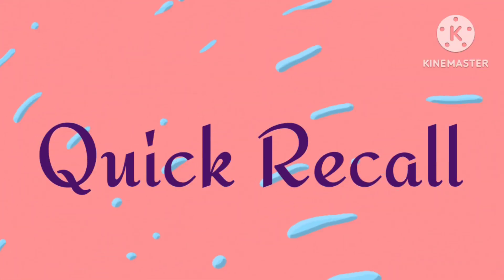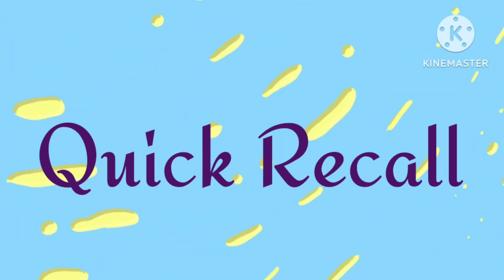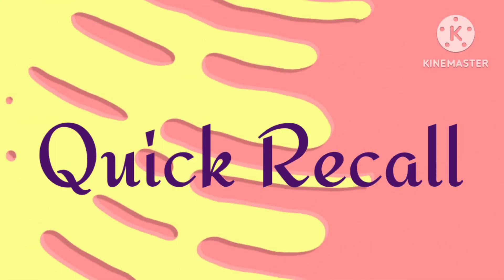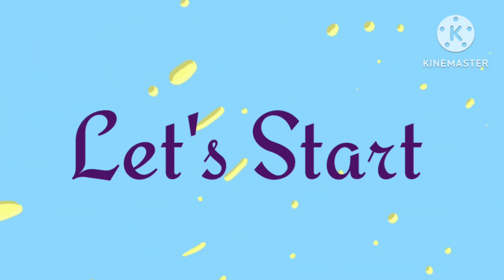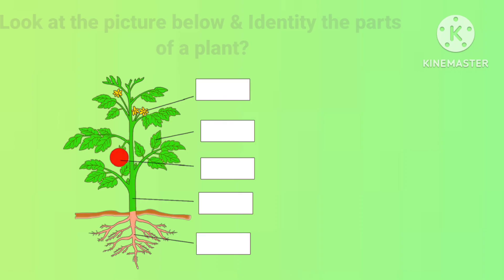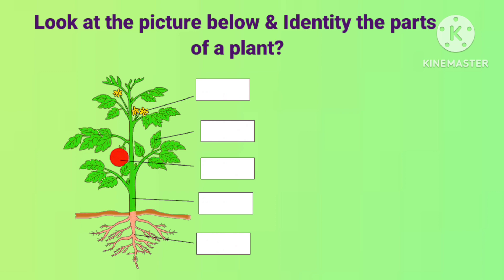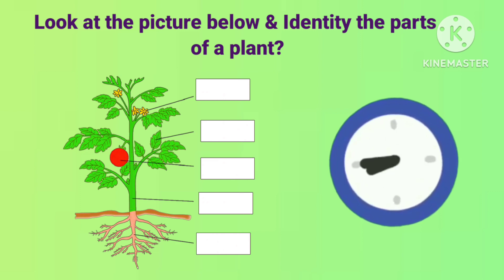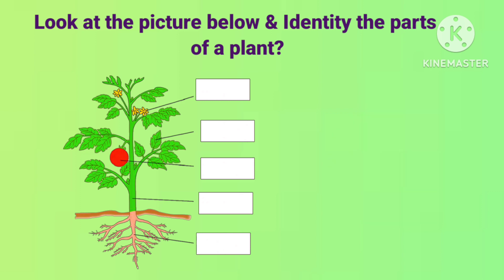So kids, it's time to recall the parts of a plant and their functions we have learnt. Are you ready? Let's start. The first question is: look at the picture and identify the parts of a plant. This is flower, this is leaf, this is fruit, this is stem, and this part is roots.